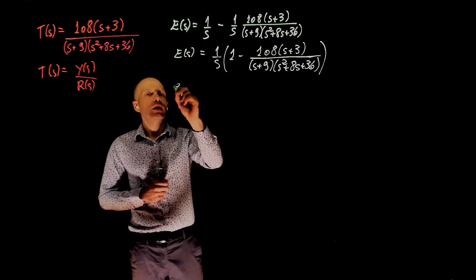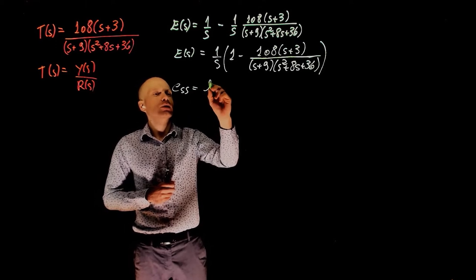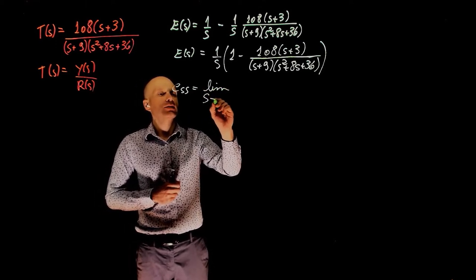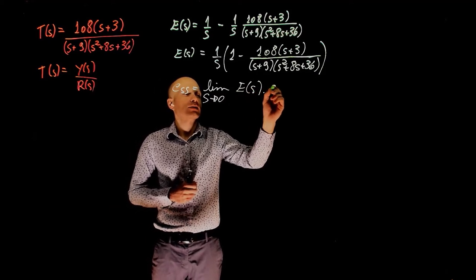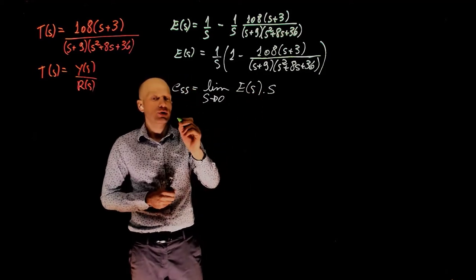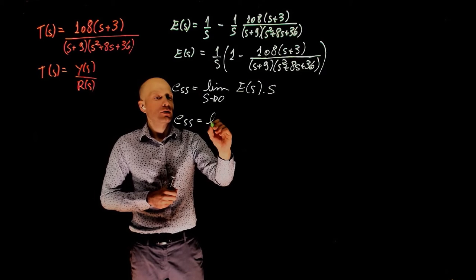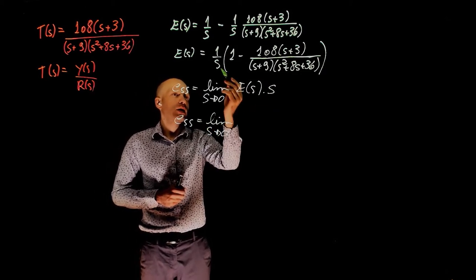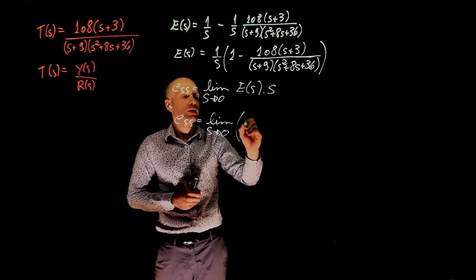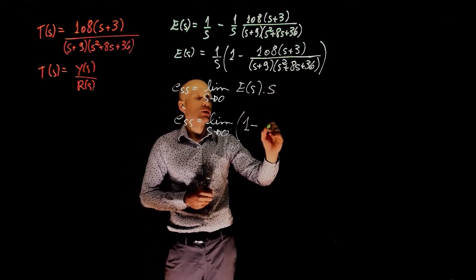The steady state error is now the limit when s tends to 0 of e of s times s. This s cancels that s, of 1 minus the transfer function again.